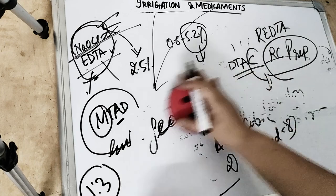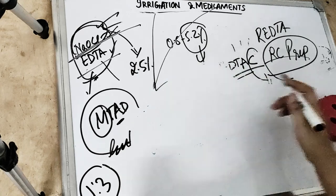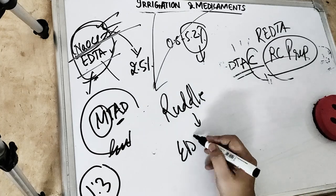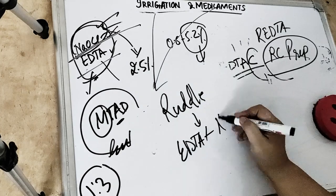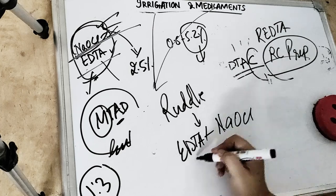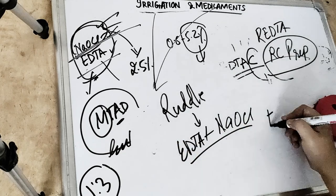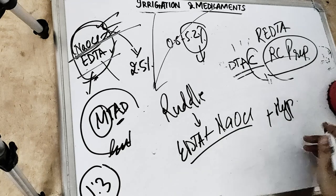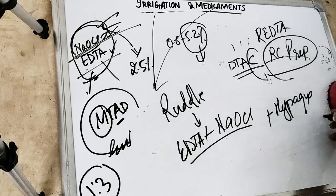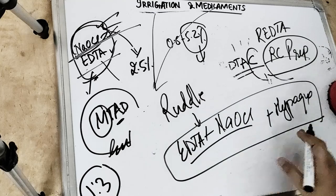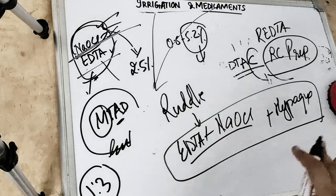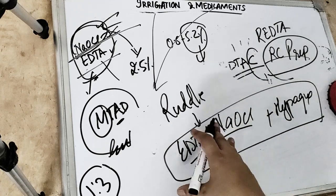Then we have something known as Ruddell solution. What is Ruddell solution? It contains EDTA plus sodium hypochloride. You must be thinking this is the same solution we use, but no. It also contains HYPAC. HYPAC is a dye, a radio-opaque dye. After we put this solution, we take the radiograph and we can see all the lateral canals. So it is used to visualize the anatomy of the lateral canals.